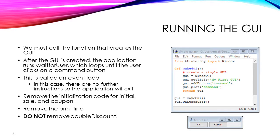In the same file near the bottom, erase those print lines that tested our function. Now add two lines to activate the GUI. First, call the function that creates the GUI: GUI equals makeGUI with an empty argument list. Notice that the function definition is indented, but when you call the function, it is not indented. That makes the GUI, but now we have to tell the computer to wait for the user to do something — simply: GUI.waitForUser with an empty argument list. That is called an event loop.